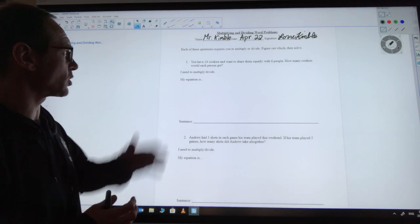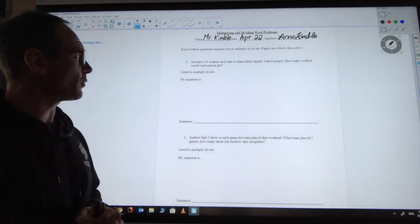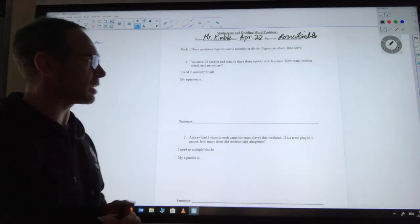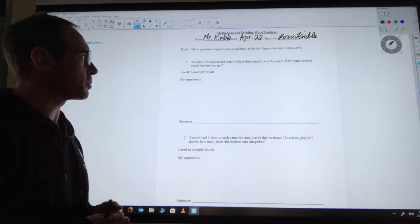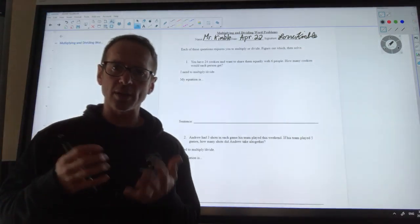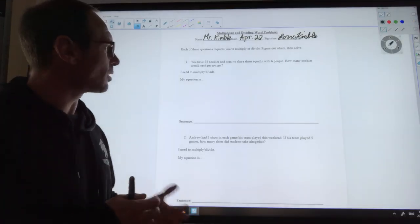The first question says: You have 24 cookies and want to share them equally with six people. How many cookies would each person get? When you're looking at this question, you need to really look over it closely.